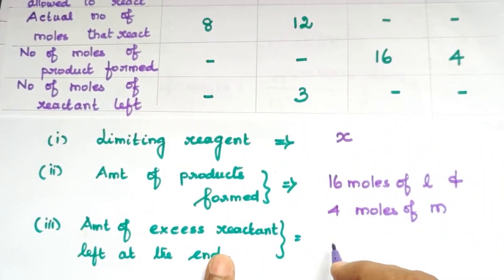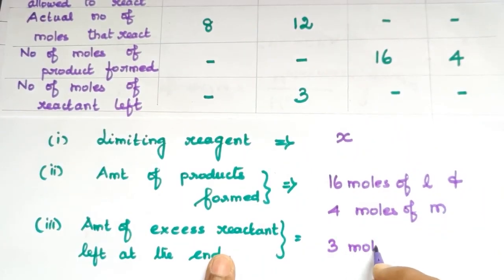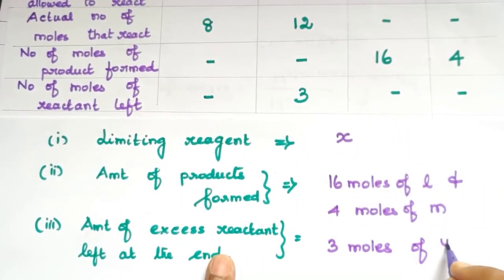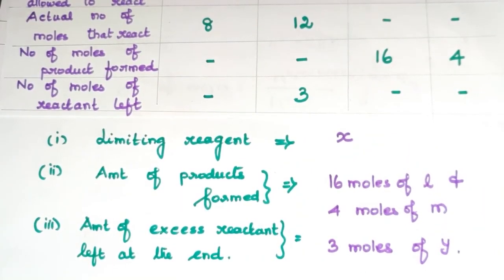How many moles are there? Three moles. Three moles of Y. This is the answer. Hope you understand. Thank you.